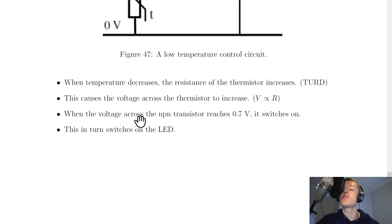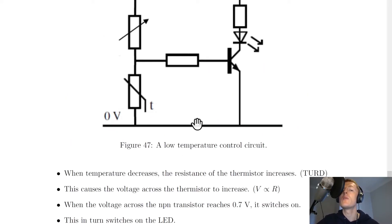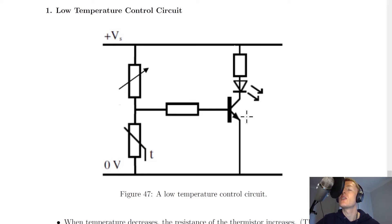So those are our steps for how the low temperature control circuit works when we've got a thermistor as the lower component. To recap: as temperature goes down, the resistance of the thermistor goes up, so the voltage across the thermistor goes up, so the voltage across the transistor goes up as well, which switches it on, and that in turn switches on the LED.